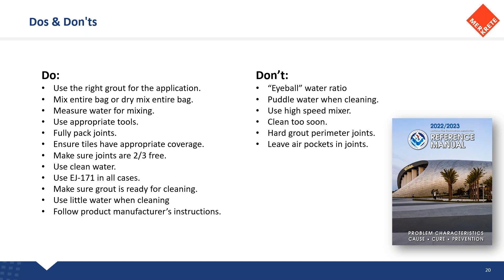My don't list: don't eyeball the water ratio, don't let water puddle when you're cleaning — if you drip water on top of your grout joints, wipe it up quickly and don't let it sit. Don't use a high speed mixer — we want 300 RPMs or less. Don't get on it and clean too soon. Don't hard grout perimeter joints and don't leave air pockets in the joints. These sound very simple, but sometimes simple re-education and reintroducing these reminders through webinars and demonstrations is something we're focusing on — to get those simple things back in mind that maybe we forgot or got a little complacent on.